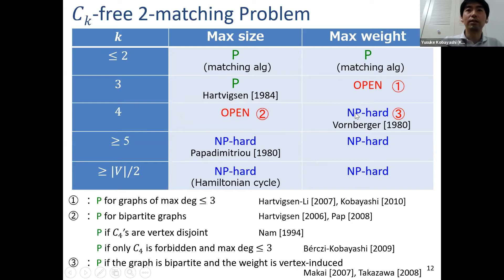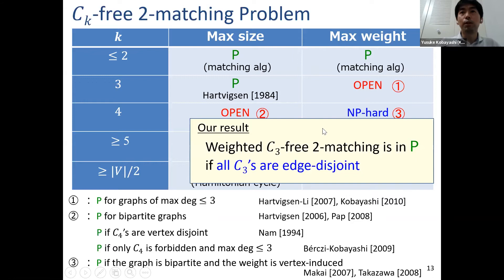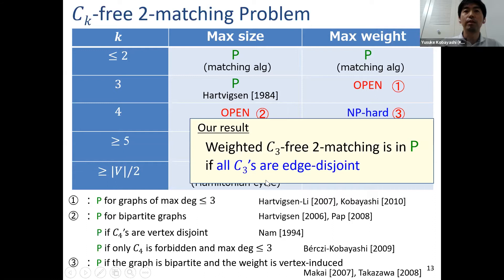There are several studies on special graph classes. For example, the weighted C_3-free two-matching problem can be solved in polynomial time when the input graph has maximum degree at most three. In this talk, we focus on the weighted C_3-free two-matching problem, and our main result is to show it can be solved in polynomial time under the assumption that all triangles (C_3s) are edge-disjoint.